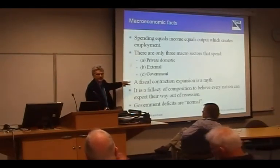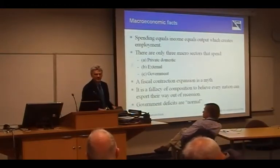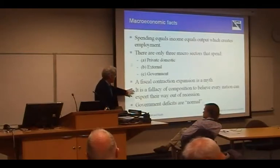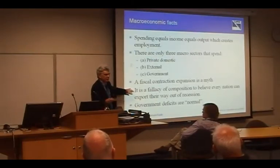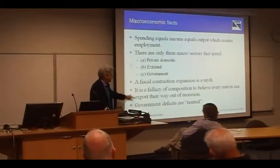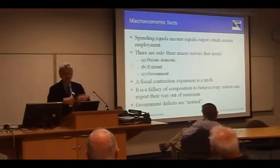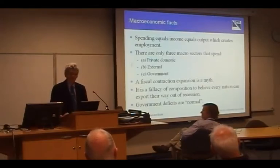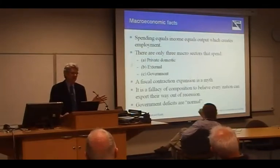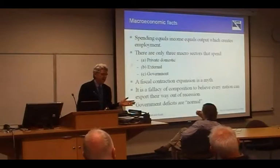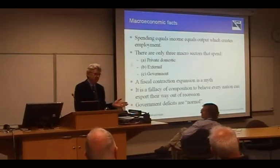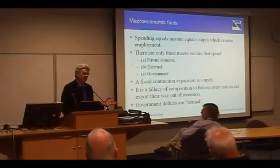Our own government in Australia believes we have to make room for private spending. There's another fallacy of composition. Keynes had a few very good fallacy of compositions relating to savings and wage cuts, but there's another important one: the IMF notion that every nation will grow via export-led growth. Not every nation can be in balance of trade surplus or current account surplus. Most nations will always be in current account deficits, and a current account deficit means you're draining demand. In Australia now, we're having the once-in-a-hundred-year mining boom, but the external sector is still draining demand because of what's going out on the primary and secondary income account.